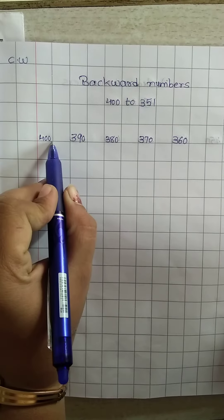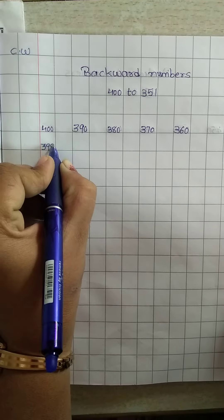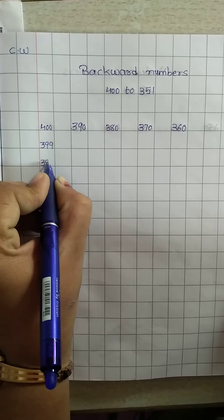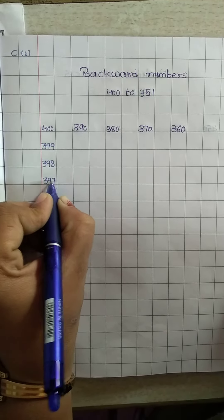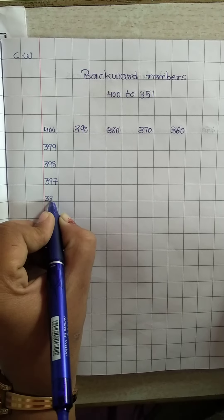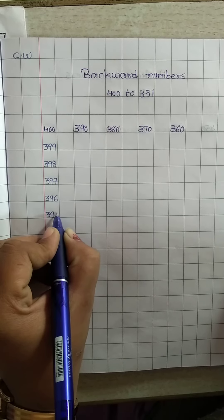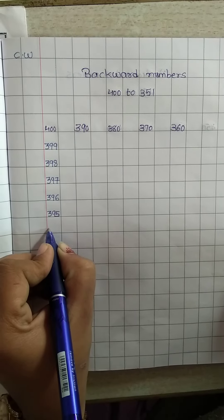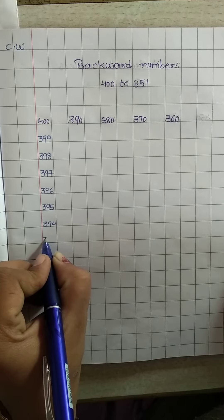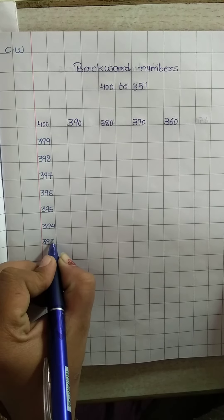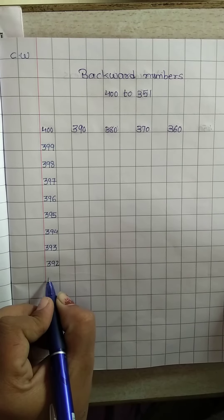Here is given 400. Tell me: 400 — before which number? 399 before? 398 before? 397 before? 396 before? 395 before? 394 before? 393 before? 392 before?